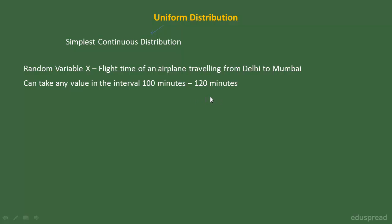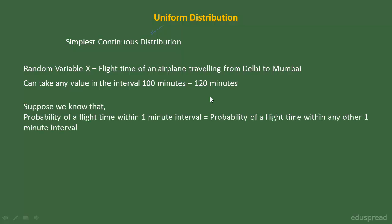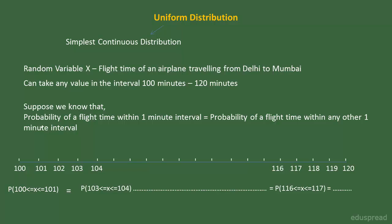Let's say we have sufficient data available to conclude that the probability of a flight time within any one minute interval is the same as the probability of a flight time within any other one minute interval. So the probability that the flight time is between 100 and 101 minutes is equal to the probability that the flight time is between 103 and 104 minutes or 116 and 117 minutes.